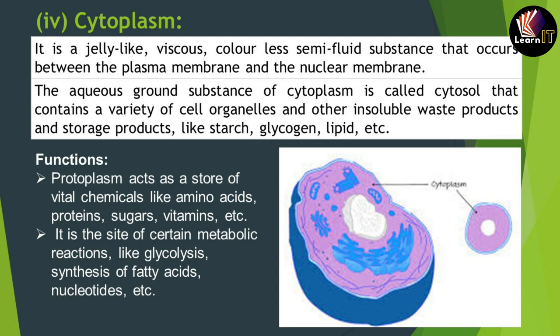The cytoplasm also contains insoluble waste products and storage products like starch, glycogen, and lipids. The basic functions of cytoplasm are: it acts as a site for vital chemicals like amino acids, proteins, sugars, and vitamins; it is the site for certain metabolic reactions like glycolysis, a step of photosynthesis; and it also helps in the synthesis of fatty acids and nucleotides, which assist in the formation of genetic material.